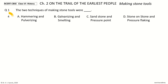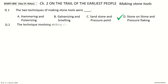And the answer is stone on stone and pressure flaking. Question 2: The technique involving striking directly one stone against another in hand is called dash.